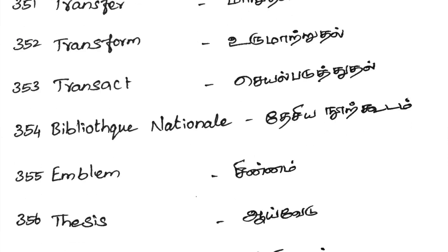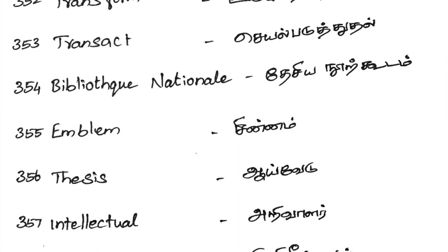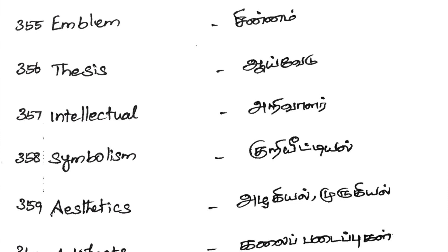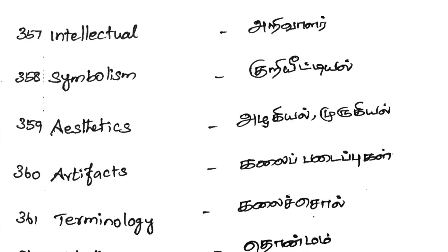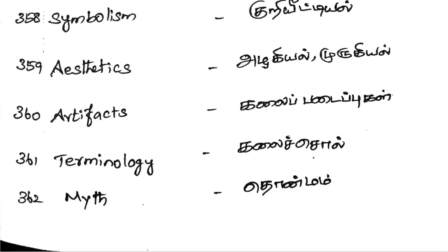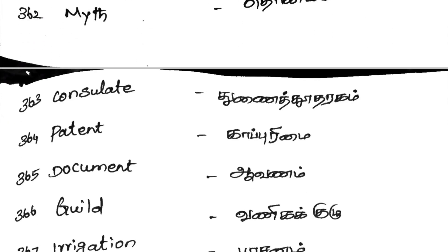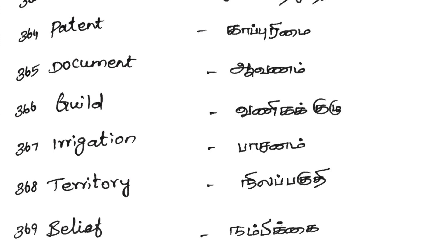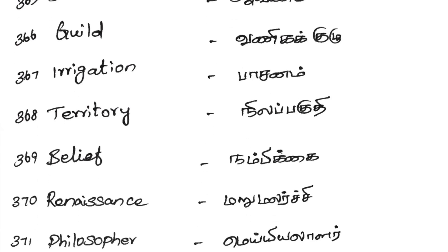Symbolism. Curious. Aesthetics. Artifact. Terminology. Myth. Consultate. Patent. Document. Avonam. Guilt. Vaniha Kulu — Commerce Guild. Irrigation — Pasanam. Territory — Nilapahudi. Belief — Nambikai.